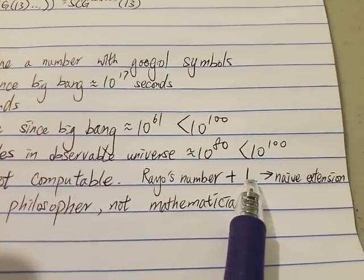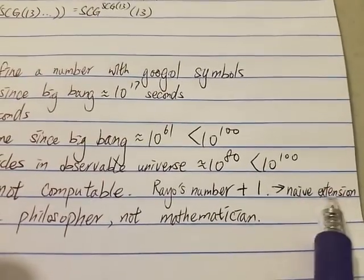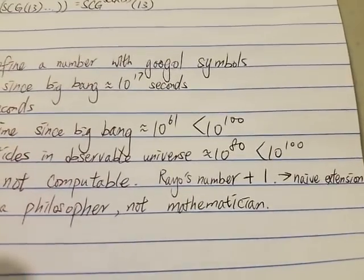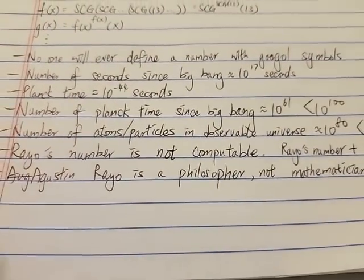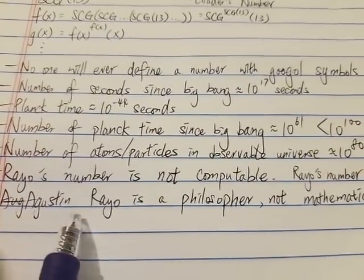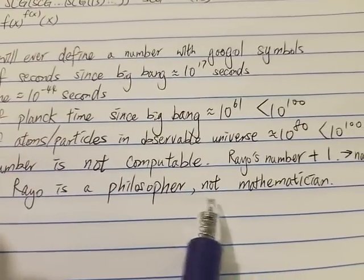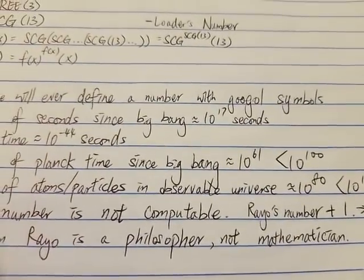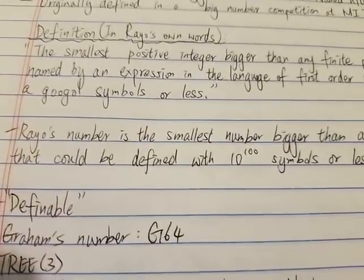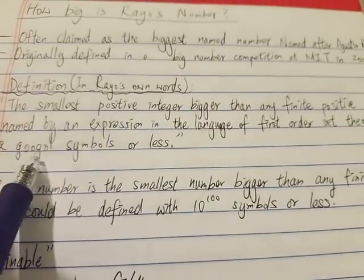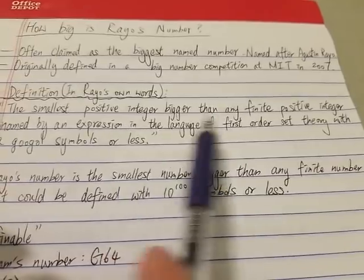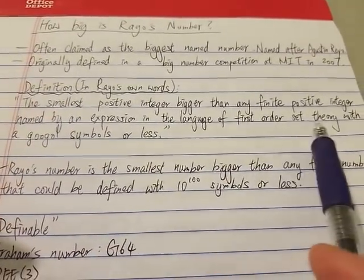A fun fact about Rayo's number is that the person who defined this number, Augustin Rayo, is actually a philosopher, not a mathematician. And I think that's a very funny fact. But I mean, it's not hard to understand that because Rayo's number is more like a thought experiment rather than a real mathematical function.